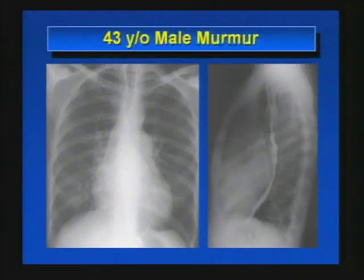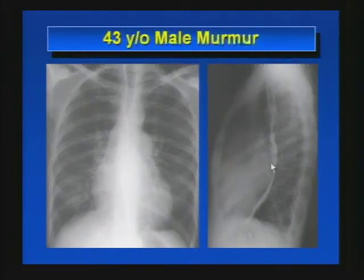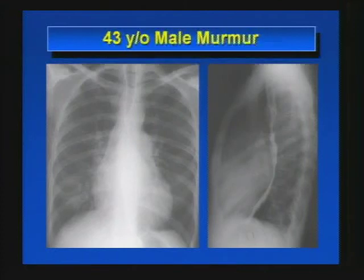Next case: 43-year-old male with murmur. If you remember from Monday, we reviewed a systematic approach to plain film and acquired heart disease, starting with whether the patient has a small or big heart. This patient has a normal heart size. We look for signposts — left atrial enlargement and ascending aortic enlargement. We can see left atrial enlargement with a double contour and compression of the esophageal contour on the lateral film. This is a small heart disease with signposts pointing to the mitral valve, consistent with mitral stenosis.